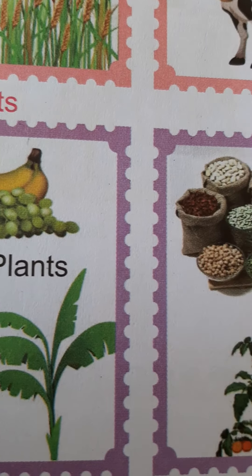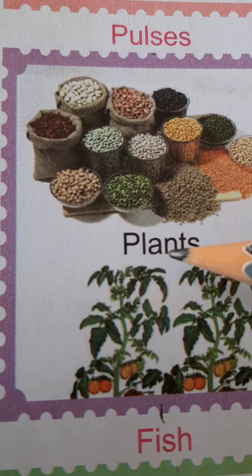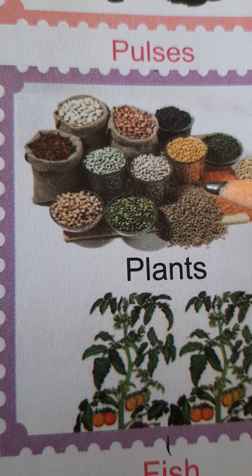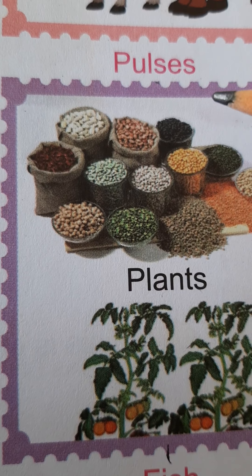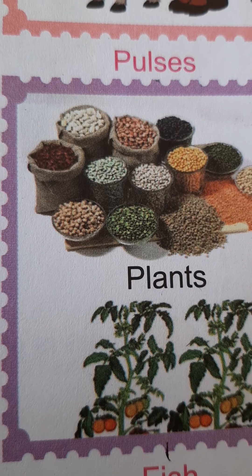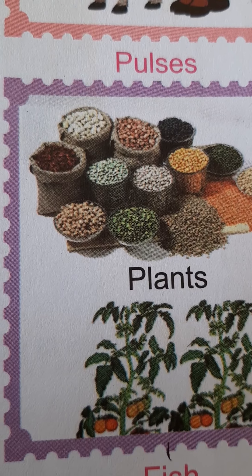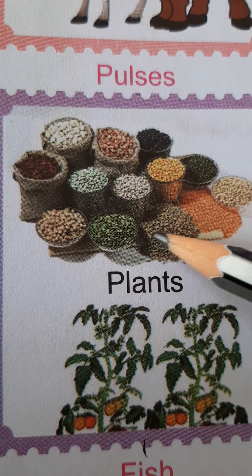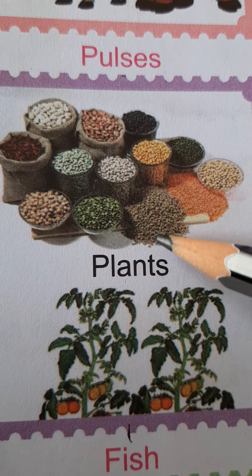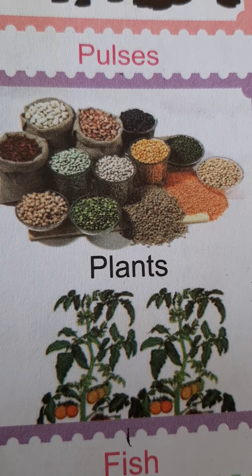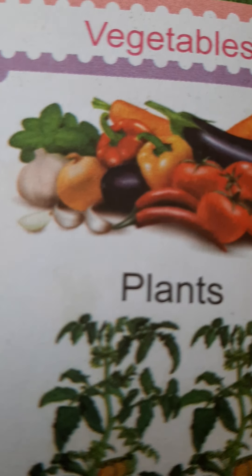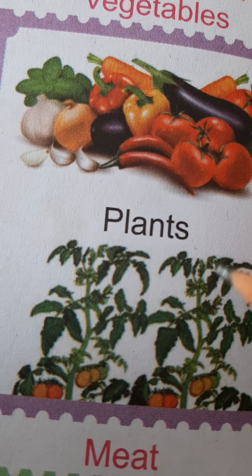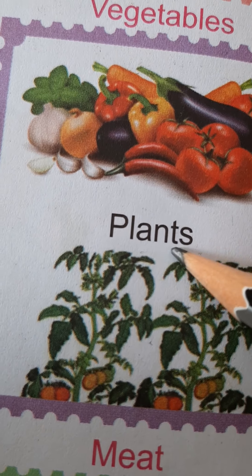Pulses, pappu. Red gram, black gram, chena. Vegetables come from plants.